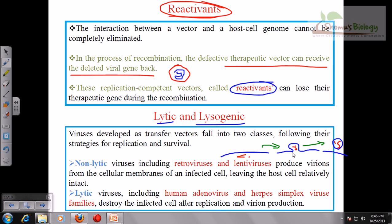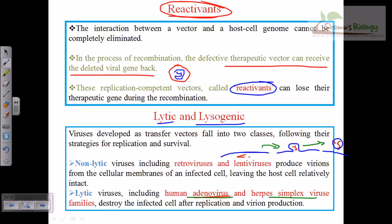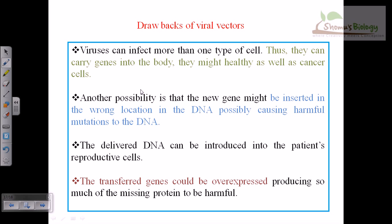In contrast, lytic viruses such as human adenovirus and herpes simplex virus families end up with lysis of the cell — destruction of the infected cell occurs after replication and virion production. If using packaging cell lines for non-lytic viruses, we can reuse them again and again. For lytic viruses, we cannot reuse them; it's one-time use and then we need to produce another cell line culture.